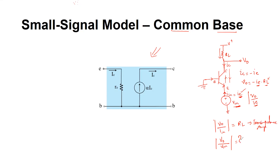To obtain the voltage gain of the amplifier, we draw the small signal model of this circuit. Since there is a load R_L connected, we model that here as well, going from collector to base, where base is grounded. When drawing the small signal model, V+ is shorted to ground, so one end of R_L comes to ground — the same node as the base — and the other end of R_L is connected to the collector pin.